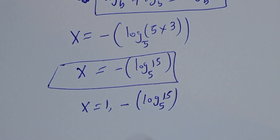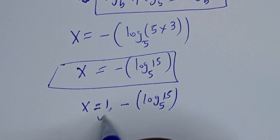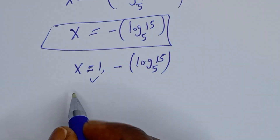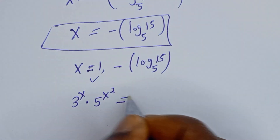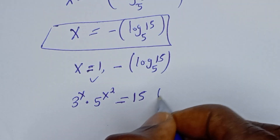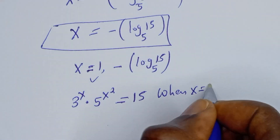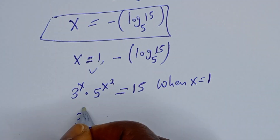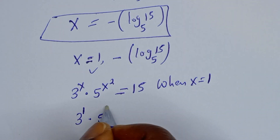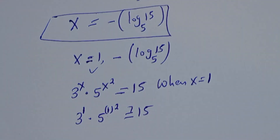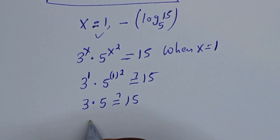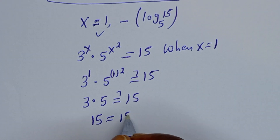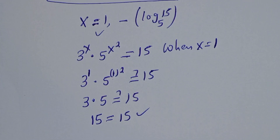Let's verify with s equals 1. The given equation is 3 to the power of s multiplied by 5 to the power of s squared equals 15. When s equals 1, we get 3 to the power of 1 multiplied by 5 to the power of 1 squared, which must equal 15. That gives 3 times 5 equals 15, which is true. So s equals 1 is confirmed correct.